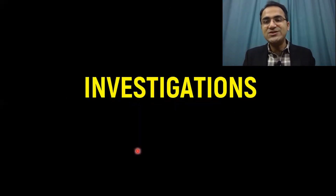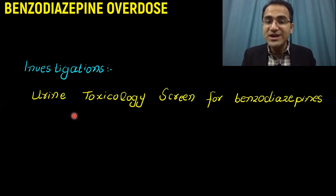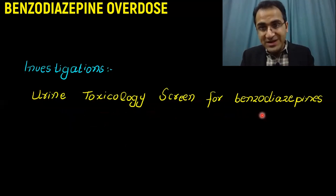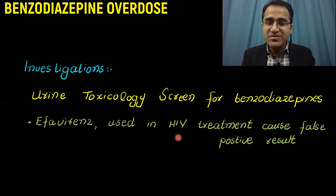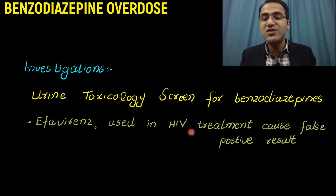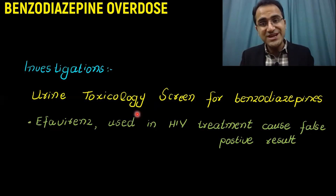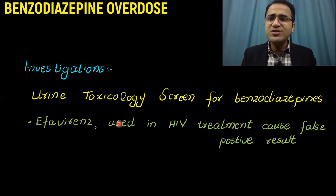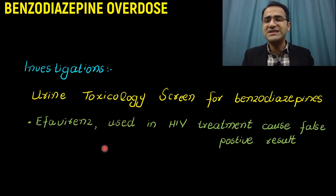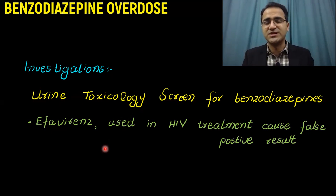Investigations needed in a patient with benzodiazepine overdose include a urine toxicology screen to look for benzodiazepines. Remember that efavirenz, an HIV treatment drug, can cause a false positive result on the toxicology screen. You also need to perform all baseline investigations including arterial blood gases to assess oxygenation and metabolic status.